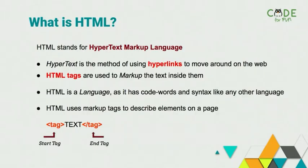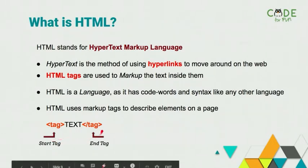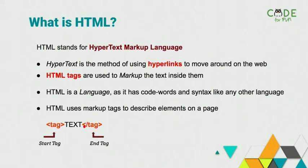So what is HTML? HTML stands for Hypertext Markup Language. Hypertext is a method of using hyperlinks to move around the web. Hyperlinks help us connect to different sections of a page, other pages within a website and an external website. HTML, unlike Python or C++, is not a programming language but a markup language - it makes use of tags. HTML is not used to program applications but to design a website. It uses code words and syntaxes just like any other language. HTML uses markup tags to describe different elements on a page. We have an opening tag and a closing tag, the closing tag indicated by a forward slash. Most tags in HTML have an opening and a closing tag except for a few.